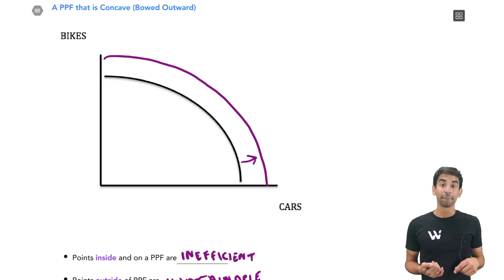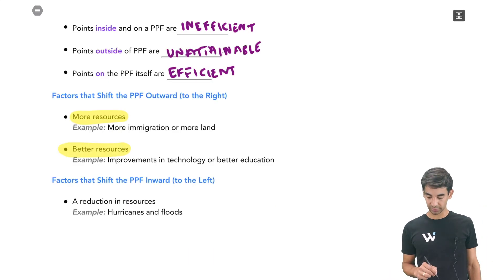Or if there were better resources. So that would be something like better technology or better education. If we have better universities, then the workers can be more productive. We have better technology. The fishing machines are faster. So that would allow us also to make more bikes and cars. So we have more resources, better resources.